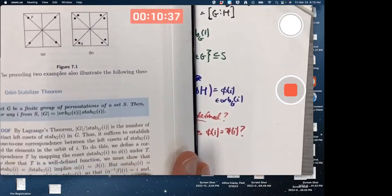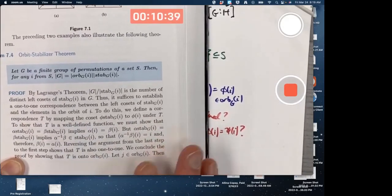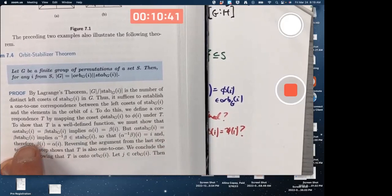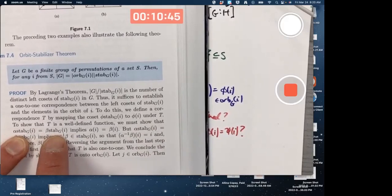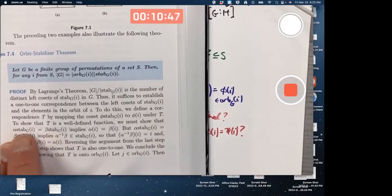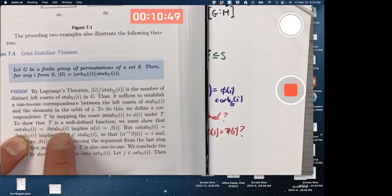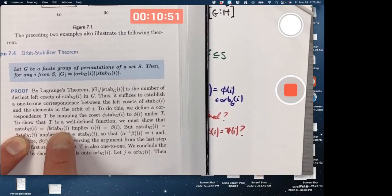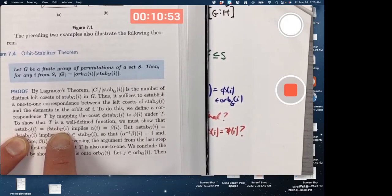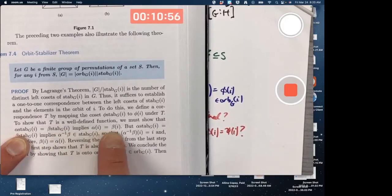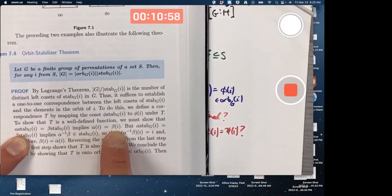They use alpha and beta here instead of phi and psi. If you've got two cosets that are the same, that's like alpha H equals beta H. I wrote phi H equals psi H. We must show that implies alpha of I and beta of I are the same.